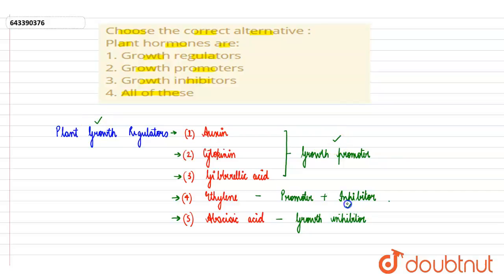Some are growth promoters and some are growth inhibitors as well. So here all of the following options would be absolutely correct. So the correct answer of this question would be option number four, all of these. So that is all for today's question.